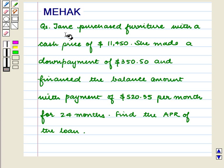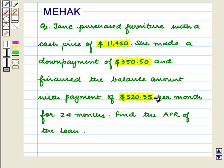Hello and welcome to the session. In this session we are going to discuss the following question. Jane purchased furniture with a cash price of $11,450. She made a down payment of $350.50 and financed the balance amount with payments of $520.35 per month for 24 months. Find the APR of the loan.